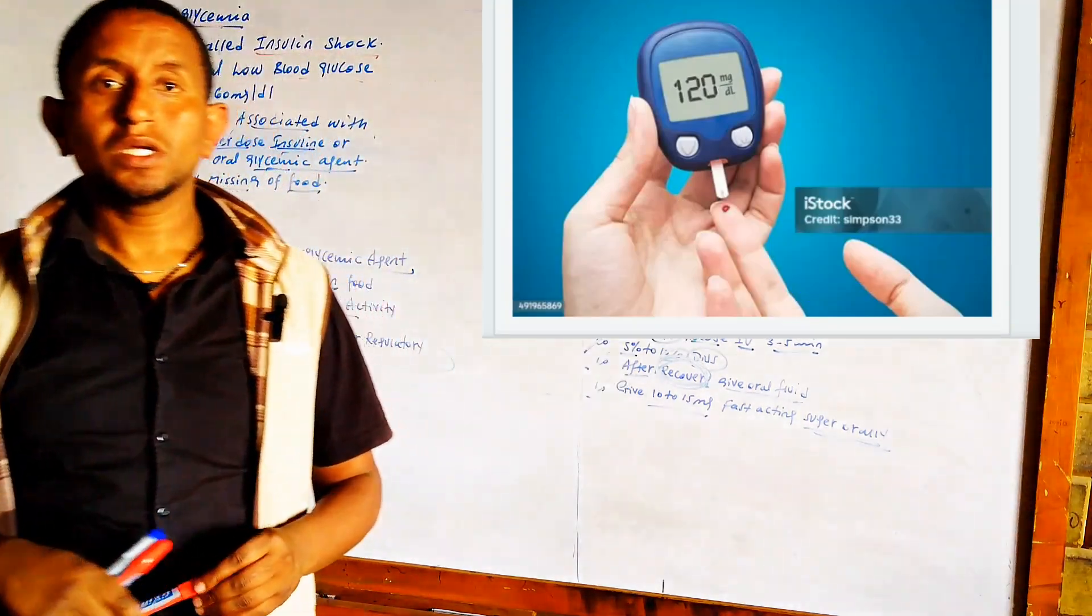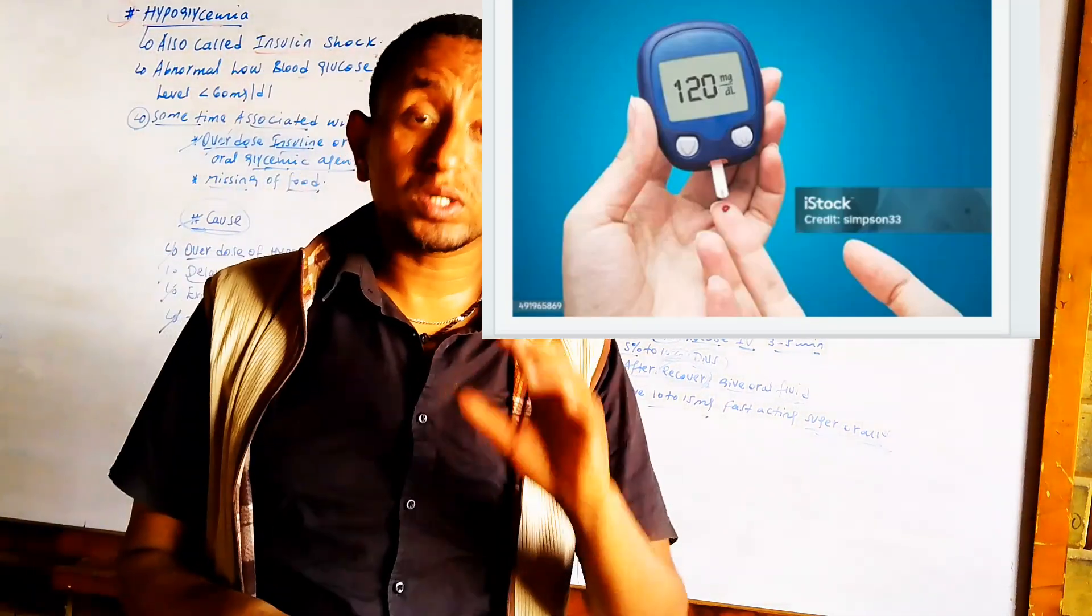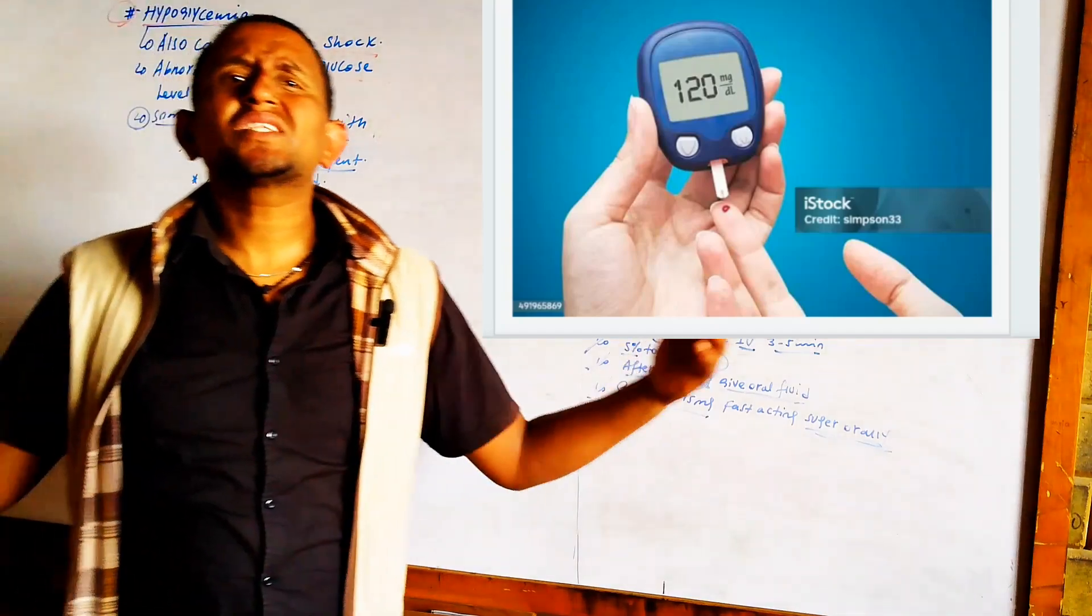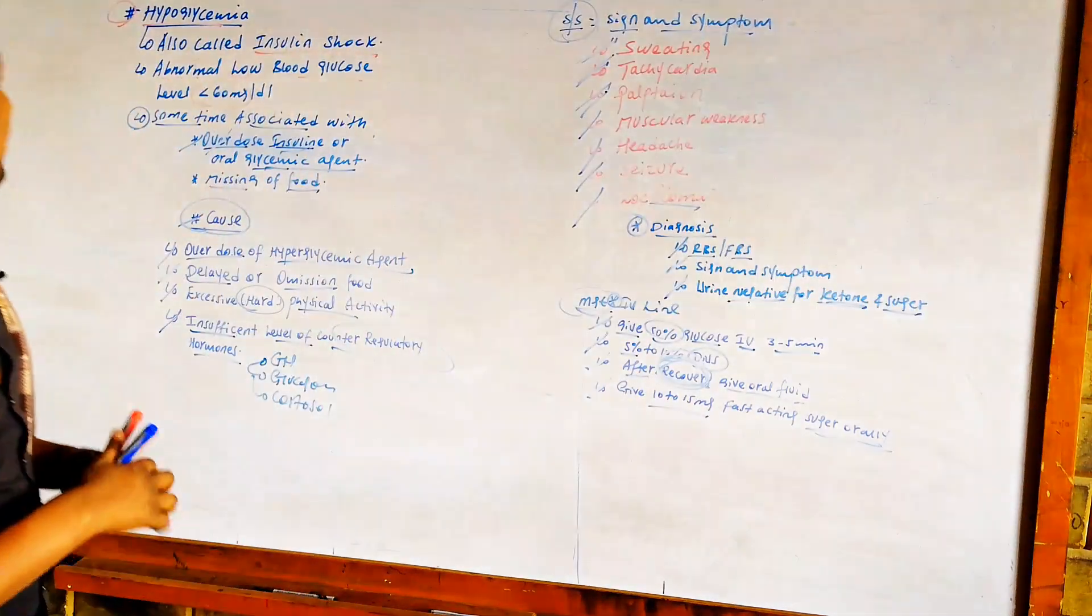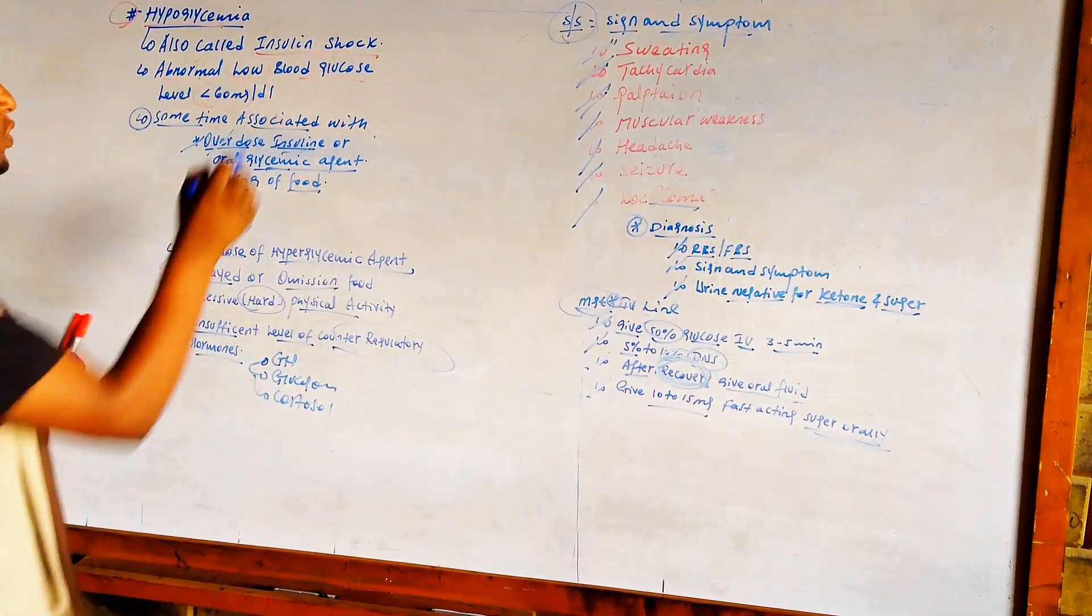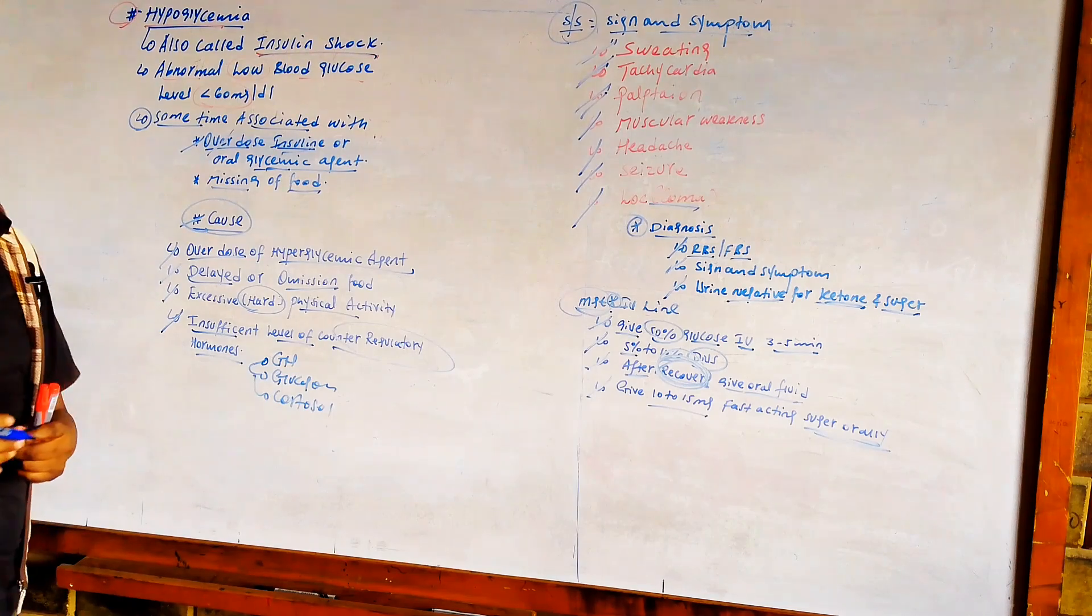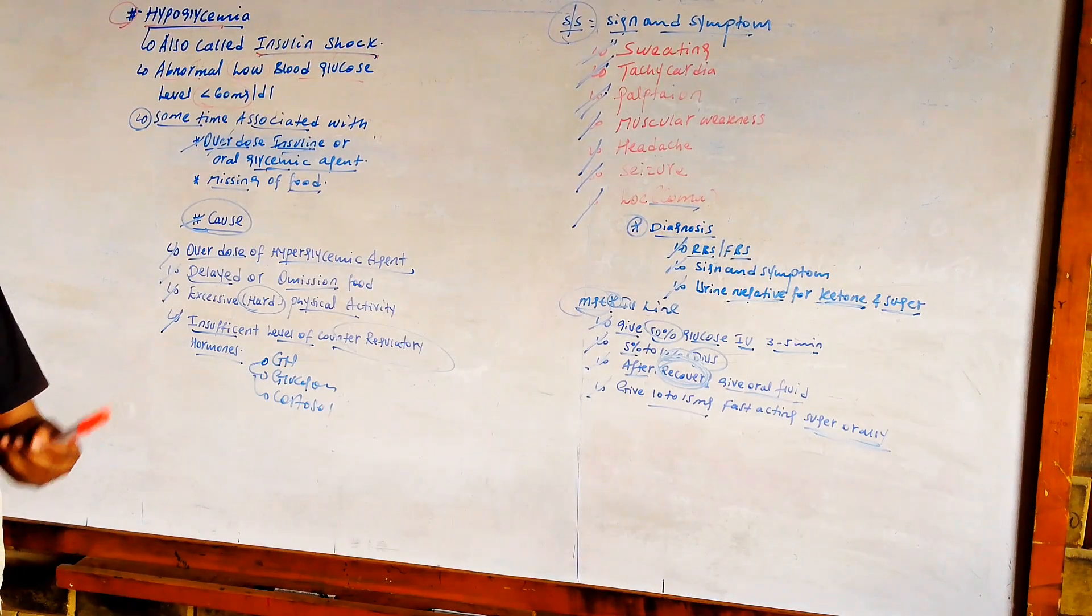The most common emergency problem is hypoglycemia. So what do we mean by hypoglycemia? Hypoglycemia is also called insulin shock of the body, because of overdose of insulin.